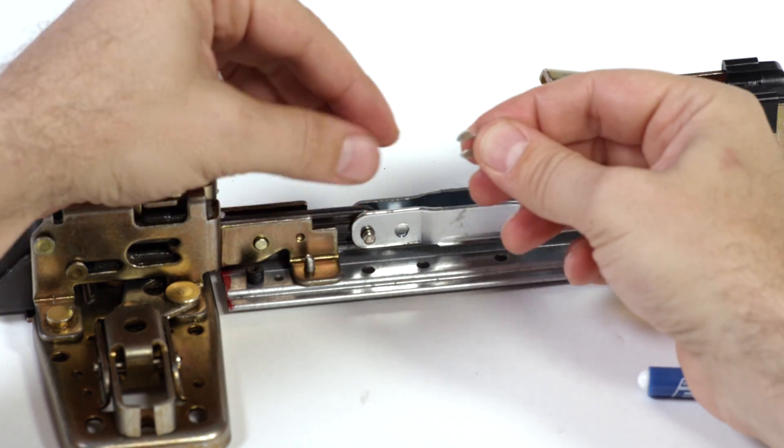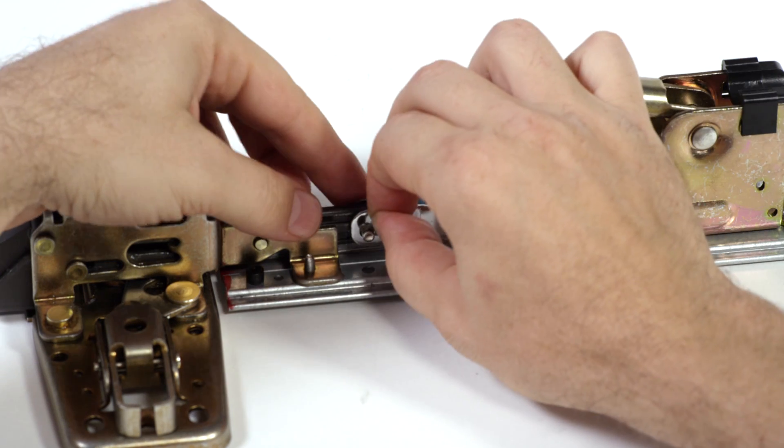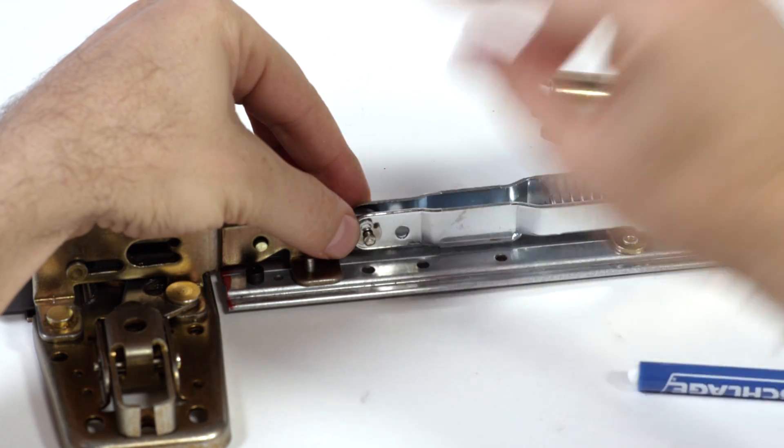To install the retaining ring, position it in the groove, then use the long nose pliers to push it firmly in position.